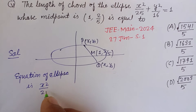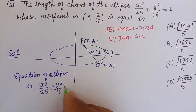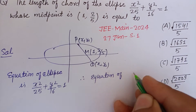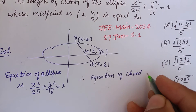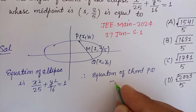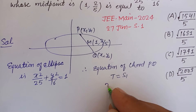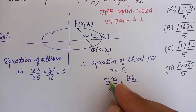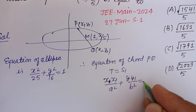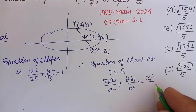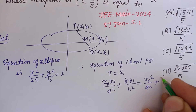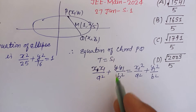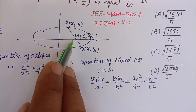The equation of the ellipse is x²/25 + y²/16 = 1. The equation of chord PQ is obtained using T = S₁: x·x₁/a² + y·y₁/b² = x₁²/a² + y₁²/b². By using this concept we can find the equation of chord PQ, where (x₁, y₁) is the midpoint.